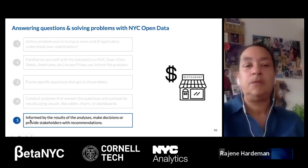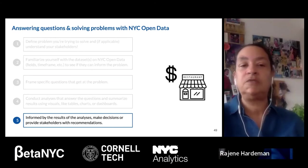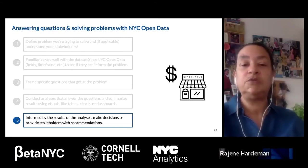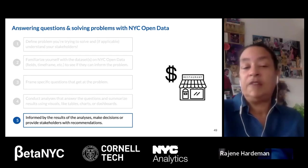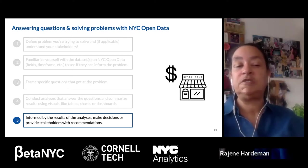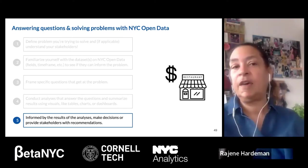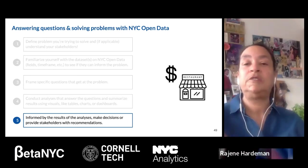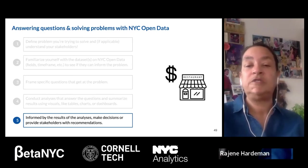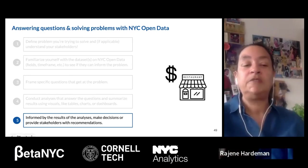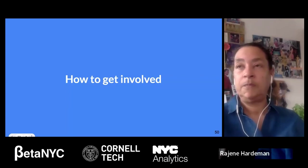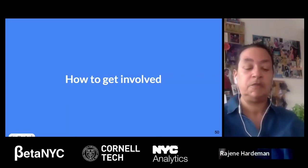At the last step, we've defined our problem, know our stakeholders, familiarized ourselves with platform datasets, framed specific questions, and conducted an analysis that answers some questions and found some solutions. Now we're informed by these results and can make decisions and provide stakeholders with recommendations. This five-step process is a useful stepping stone for interrogating data within the NYC Open Data platform to pull specific data and answer problems.